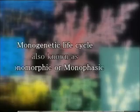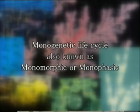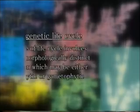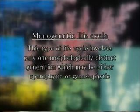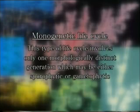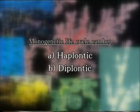First of all, we will take up the monogenetic life cycle, which is also known as monomorphic or monophasic type. In this type of life cycle, there is only one morphologically distinct generation which may be either sporophytic or gametophytic. Cytologically, this monogenetic type of life cycle may be haplontic or diplontic.